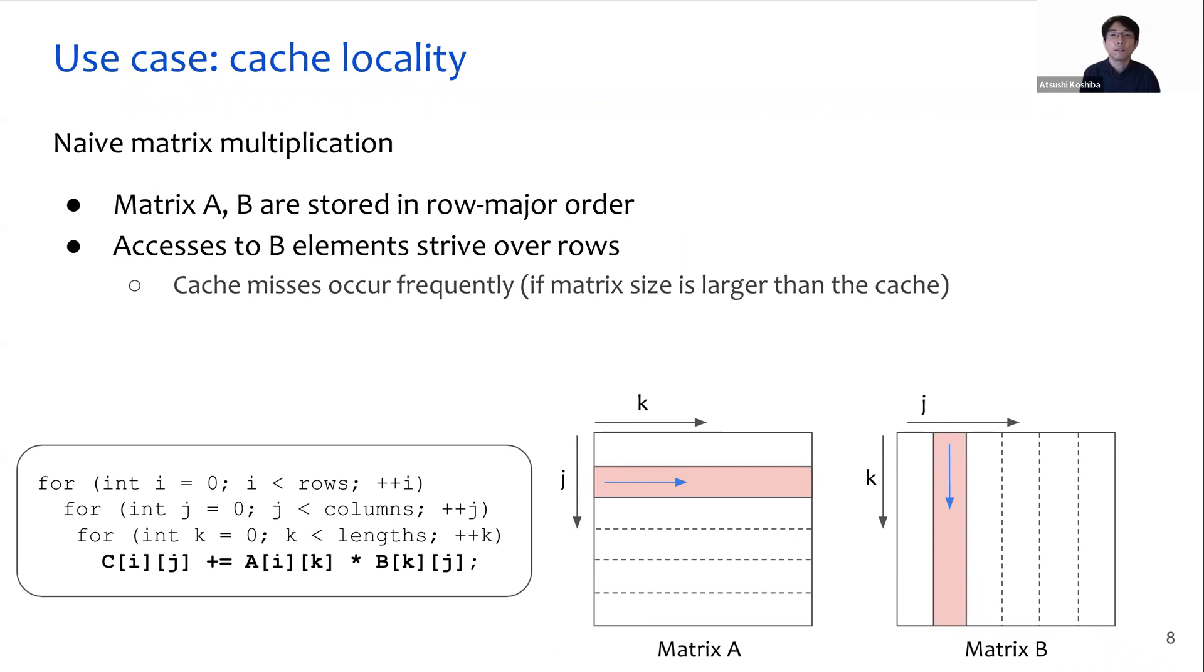For better understanding of cache locality, let me introduce a bad example of matrix multiplication code shown in this slide. In this example, matrix A and B are stored in row-major order, where continuous elements of a row reside next to each other in memory. The problem with this code is that accesses to the elements of matrix B hurt cache locality because they stride over rows. As a result, cache misses occur frequently if the matrix size is larger than the cache capacity.